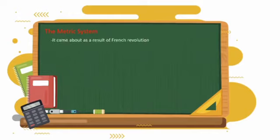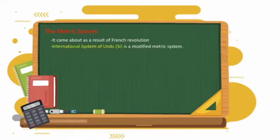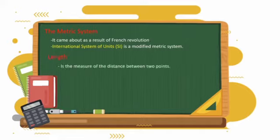The metric system: It came about as a result of French Revolution. The metric system has been modified to which we call now as International System of Units. In this lesson we will cover quantities that involve length, mass, and volume.